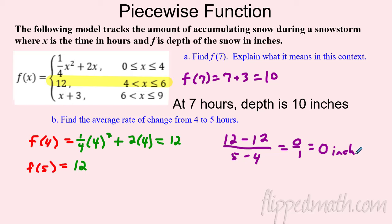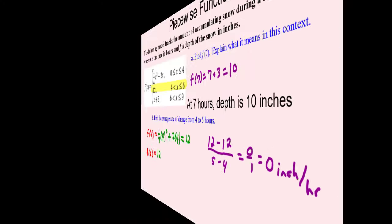The average rate of change is zero inches of snow per hour between hours 4 and 5 — because it stopped snowing. That's why there's no rate of change. Pretty cool one to end on! Great job on this chapter. Go ahead and rock out that practice, good luck on your mastery check, peace out.